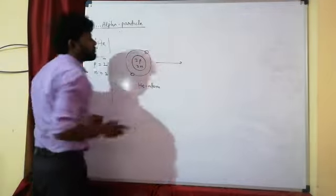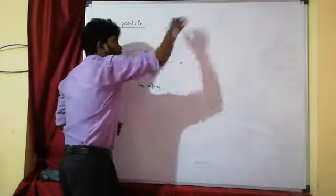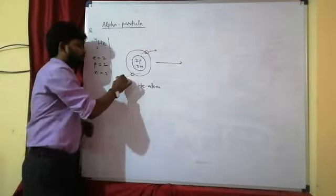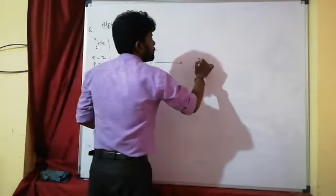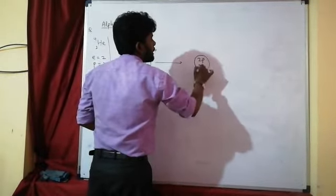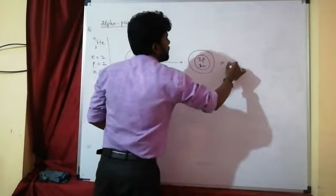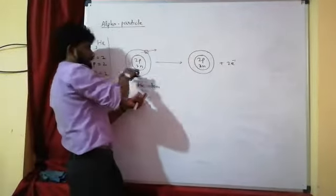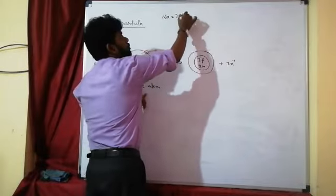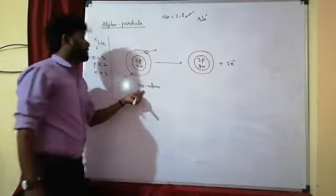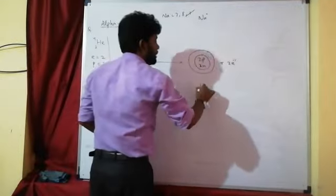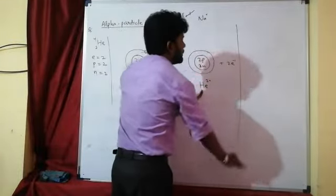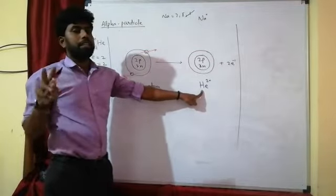If we remove both electrons from the helium atom, we are left with 2 protons and 2 neutrons — giving a net charge of +2. Just as sodium loses 1 electron to become Na⁺, helium losing 2 electrons becomes He²⁺, which is a doubly-charged helium ion with 2 positive charges.